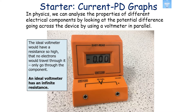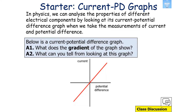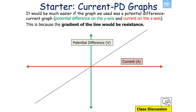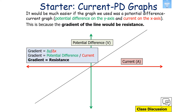In theory, an ideal voltmeter has an infinite resistance. We can then analyse properties of different electrical components by looking at their current potential difference graphs. The gradient of such a graph tells us something important. It would be easier if we used a potential difference current graph with potential difference on the y-axis and current on the x-axis, because the gradient would be potential difference over current, which gives resistance.